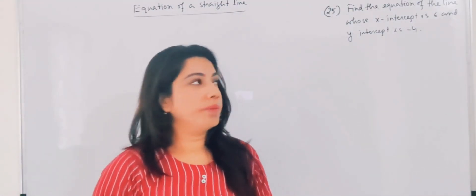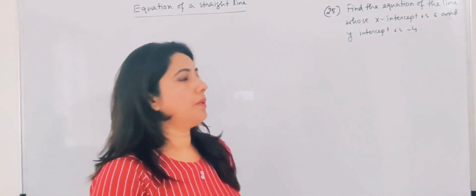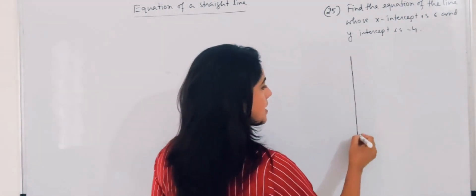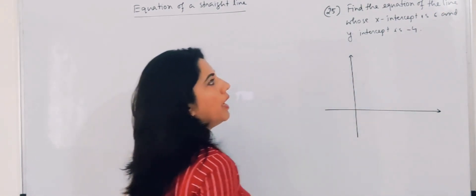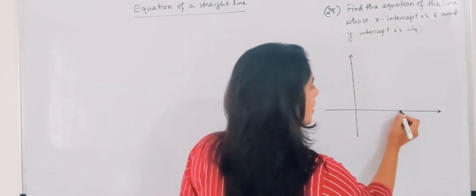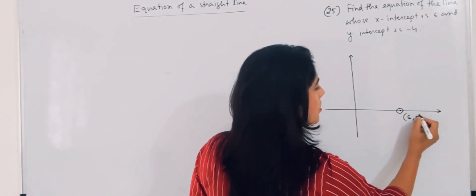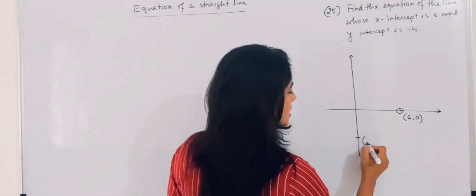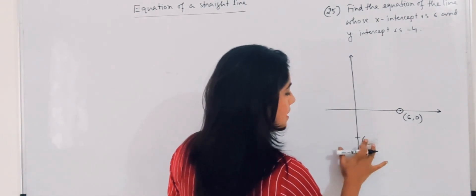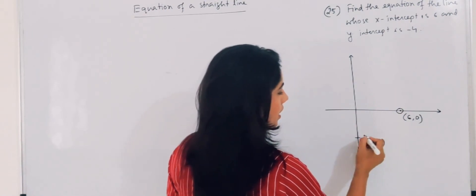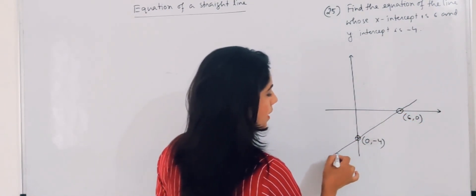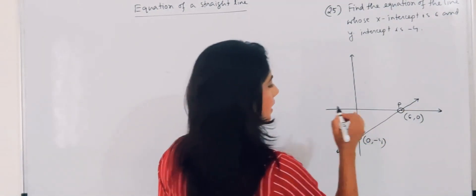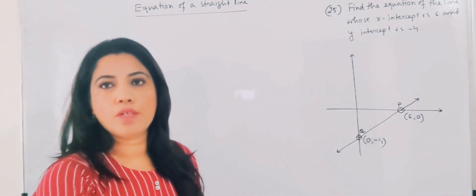Question 25. Find the equation of the line whose X-intercept is 6 and Y-intercept is -4. X-intercept is 6 means the line passes through (6, 0), and Y-intercept is -4 means the line passes through (0, -4). So we have two points and can find the equation by the two-points form.